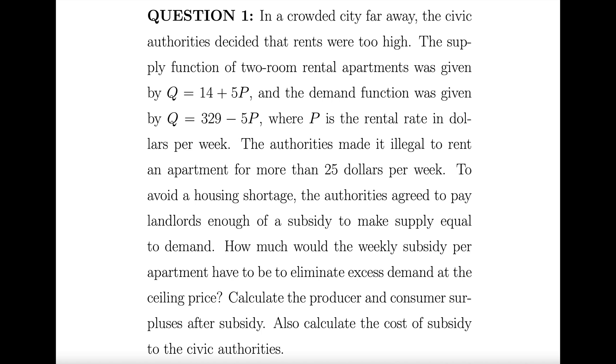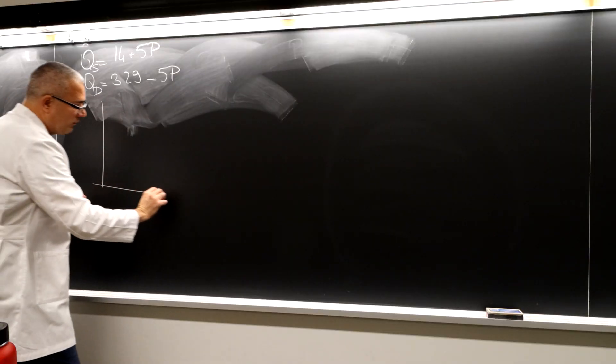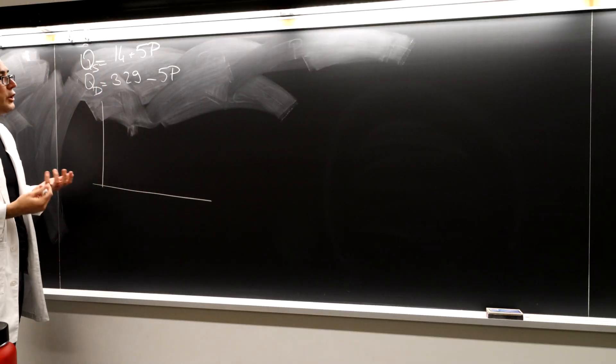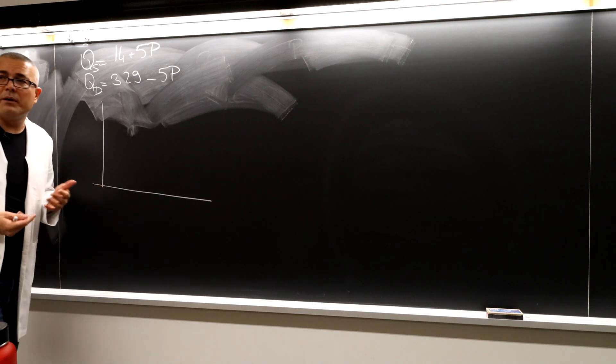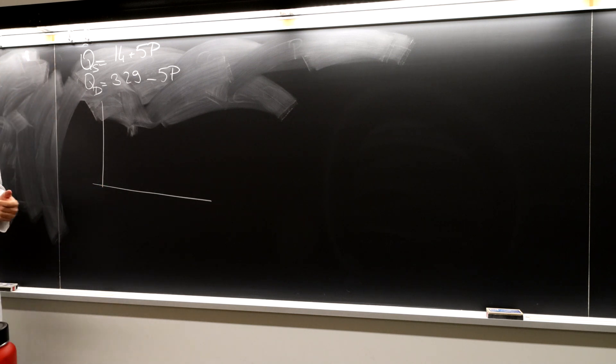How much would the weekly subsidy per apartment have to be to eliminate excess demand at the ceiling price, calculate the producer and consumer surplus after subsidy, and calculate the cost of subsidy to the civic authorities? I know this is very much like what we learned in intermediate micro, but I just wanted to refresh our memories with at least one example.